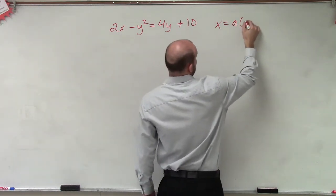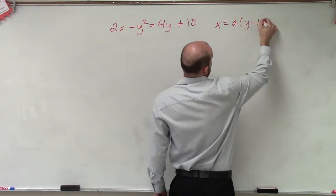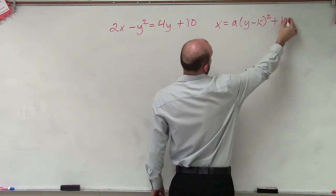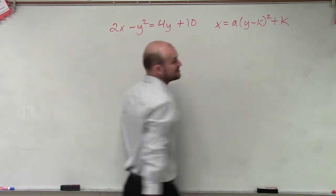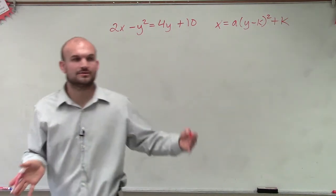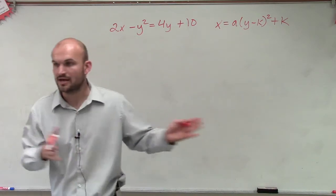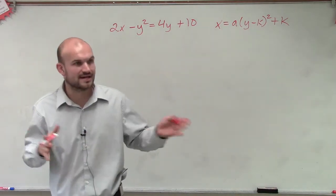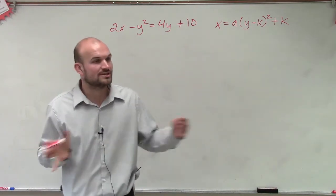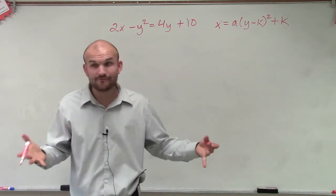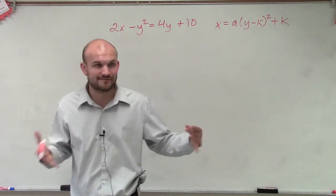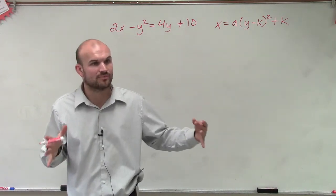So therefore, I'm going to write out the vertex form of a parabola that is going to be horizontal. So it's a times y minus k squared plus h. Now, as you guys remembered, when I showed you the difference between these — the focus, directrix — these are different, right? They're not the same rules. You have to follow a different process.